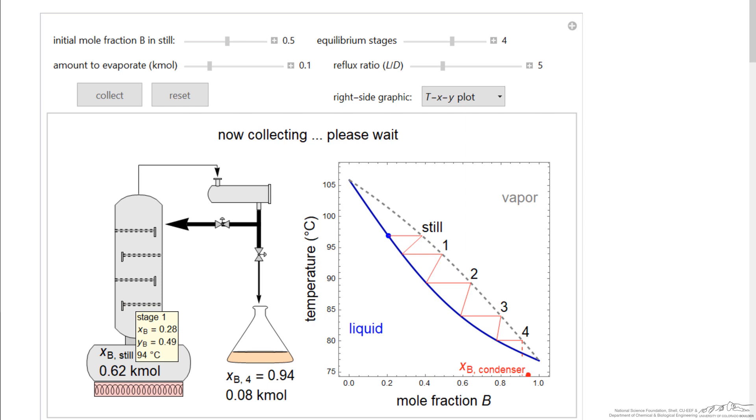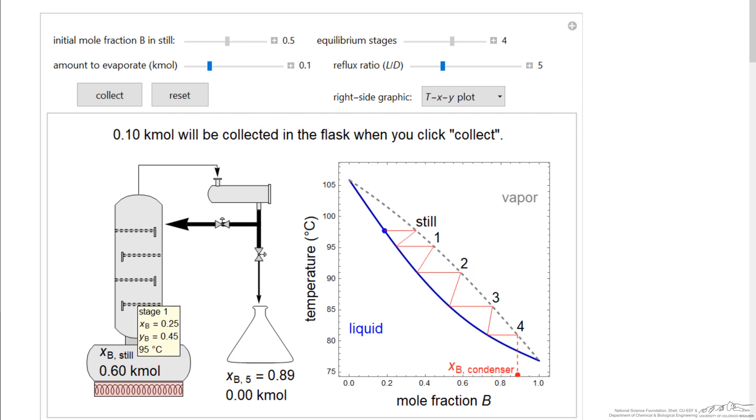If we hold the mouse over the stages, we can see the compositions and the temperature in each stage. Here we can see the composition being collected.